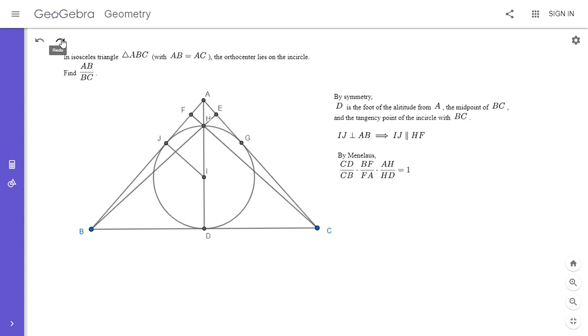So since IJ is perpendicular to AB, it has to be parallel to HF because HF is also perpendicular to AB. And now I'm going to try to use Menelaus's theorem on the figure. So by Menelaus, we have CD over CB times BF over FA times AH over HD is equal to one. That's because if you have triangle ABD, you can take HFC as a transversal. And then applying Menelaus, you get this fact. And it's clear by symmetry that CD over CB is a half. So first, I'm just going to note that. Now, what about BF over FA? Well, we don't know that yet, but I'm going to try to calculate AH over HD.